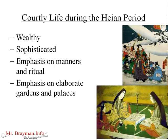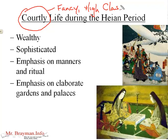The Heian period also became a very courtly period — fancy, high class. Japan became very wealthy, and these aristocrats were very sophisticated, with an emphasis on manners, ritual, and very formal, stiff behaviors. As an American, I kind of associate that with traditional Japanese culture, and that's an offshoot from the Heian period. There was also an emphasis on elaborate gardens and palaces. Even though the Heian emperors were trying to distance themselves from China, they fell into this Chinese way of focusing on the upper classes and ignoring the people — very similar to the downfall of the Han and Tang dynasties as the emperors retreated into their pleasure palaces.